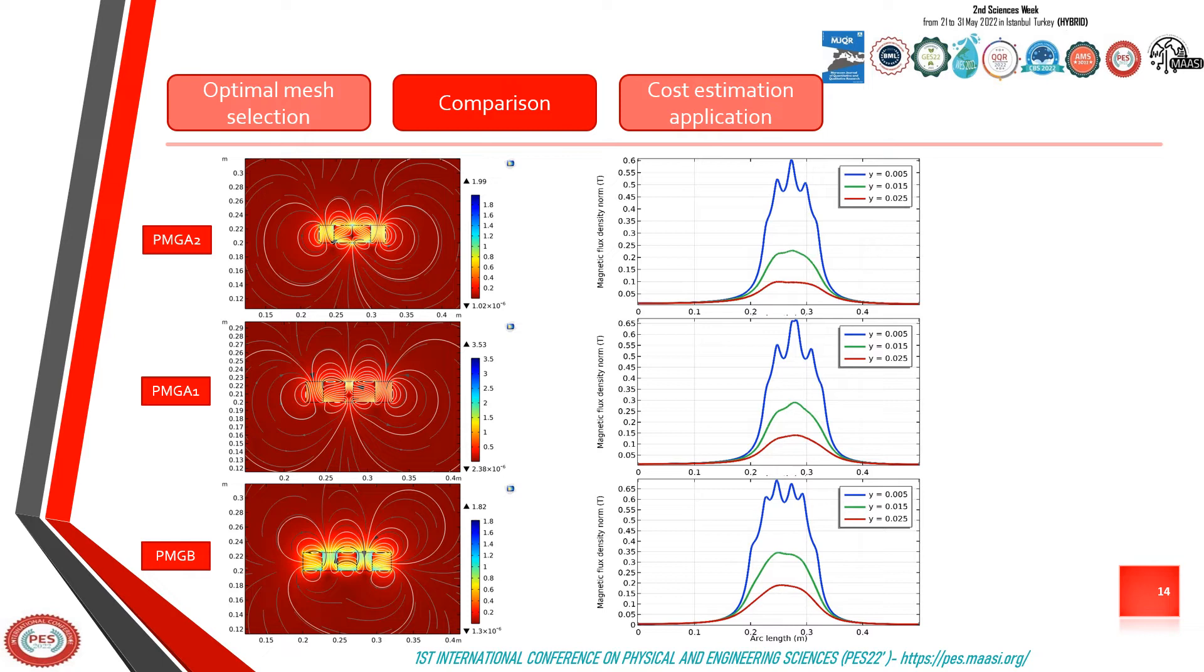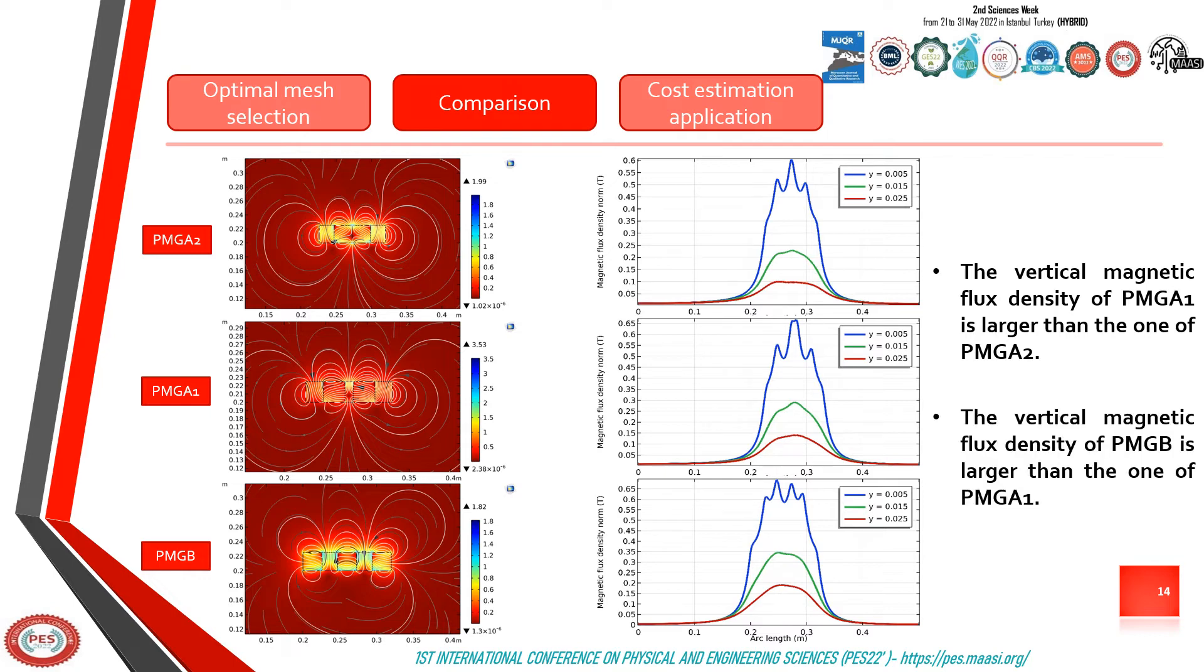We conclude that the iron block concentrates the magnetic flux in the center of the magnetic array. We can also conclude that the vertical magnetic flux density of PMG A1 is larger than the one of the PMG A2, and the vertical magnetic flux density of PMG B is larger than the one of the PMG A1.